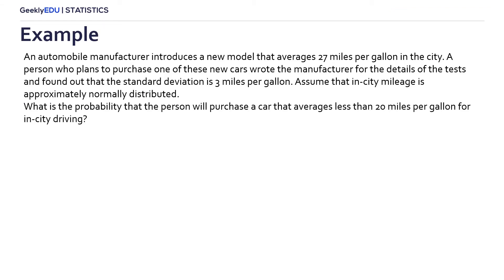I think we are ready to solve an example. An automobile manufacturer introduces a new model that averages 27 miles per gallon in the city. A person who plans to purchase one of these new cars wrote the manufacturer for the details of the test and found out that the standard deviation is 3 miles per gallon. Assume that in-city mileage is approximately normally distributed. What is the probability that the person will purchase a car that averages less than 20 miles per gallon for in-city driving?